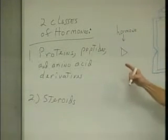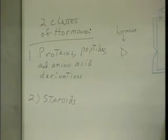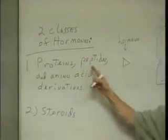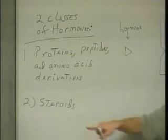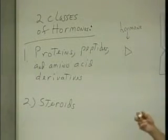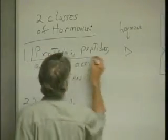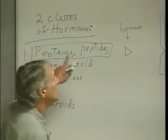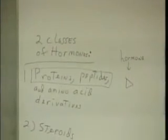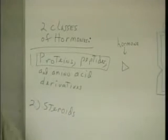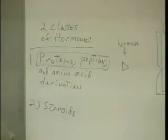This lecture is going to discuss the way that the two different types of hormones interact with their receptors. The two classes of hormones are: proteins, peptides, and amino acid derivatives — that's one class — and the second class is steroids. We'll start with the proteins and peptides, because proteins and peptides are very large molecules. Hormones are informational molecules — they want to give some information to the cell to tell it to do something. However, proteins and peptides are too large to get inside the cell.